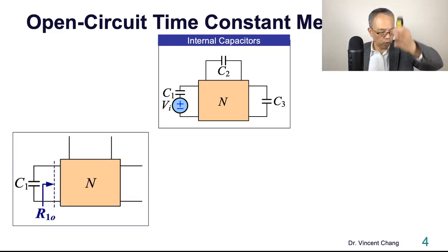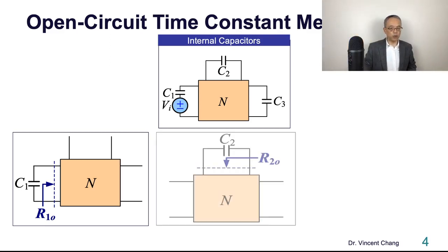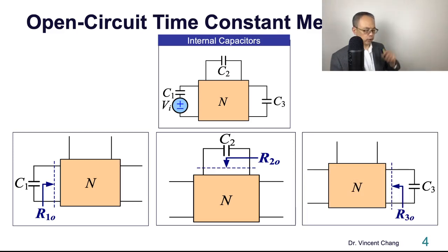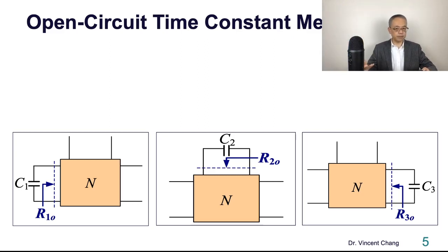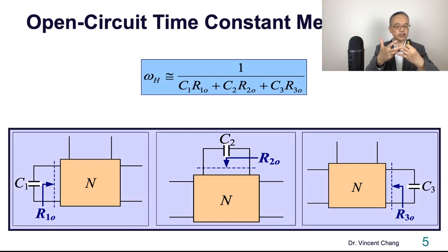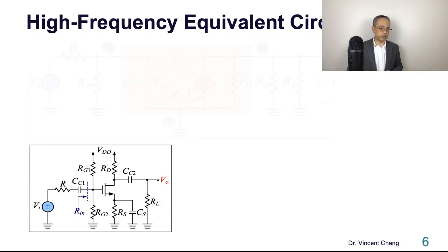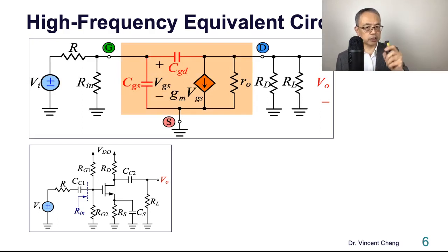The first, in step one, you set the input signal to zero. And then step two, you leave two and three open, and then calculate R1 open, and calculate R2 open. And try to get the resistance seen by the last capacitance C3, which is R3O. And then the next step, you get all the time constants. The final step, you just simply put the sum of all time constants into the denominator, and this will give you the answer for quick estimation for upper three decibel frequency.